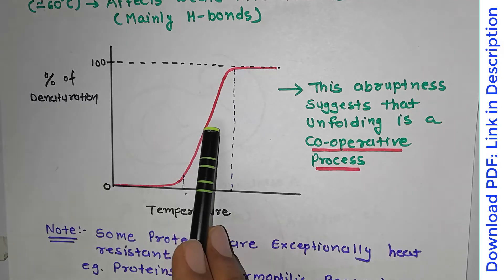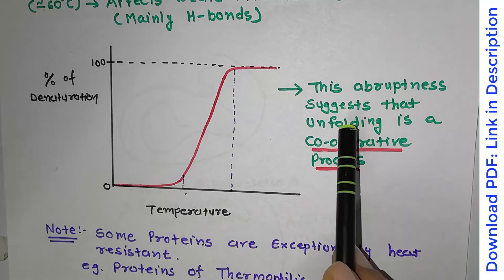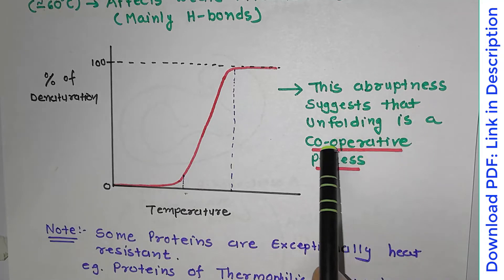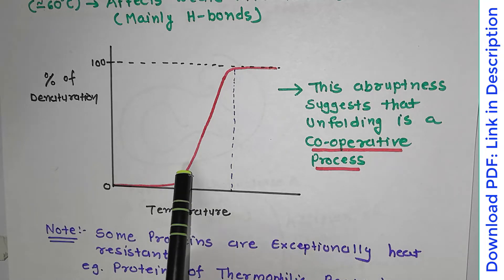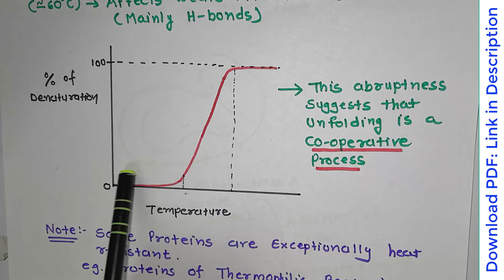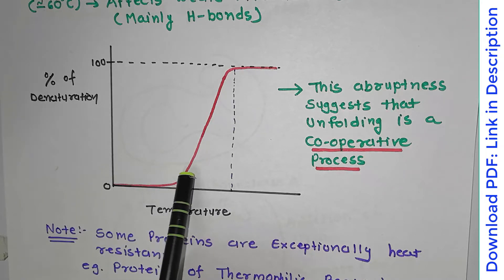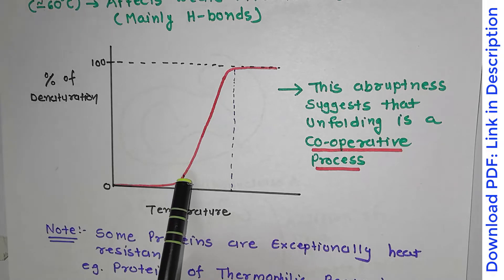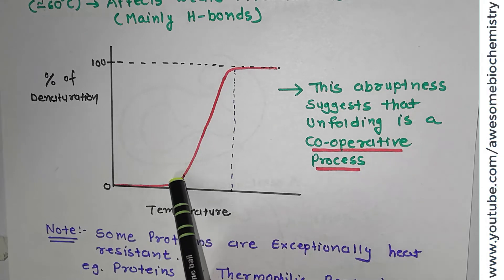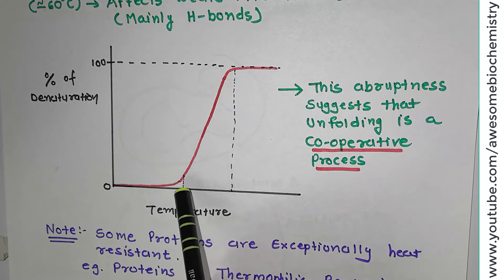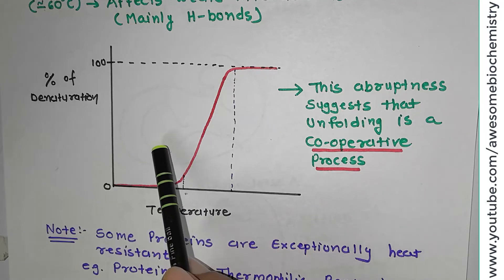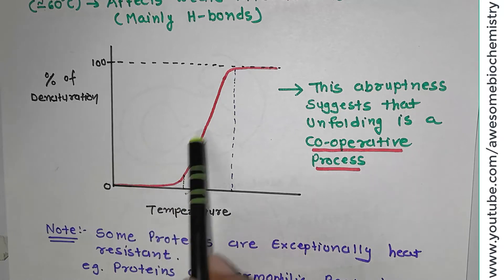This abruptness suggests that unfolding is a cooperative process. At a temperature of, let's say, 55 degrees Celsius, only a minor portion of the protein is getting denatured — maybe 2% or 3%. This very small part becomes destabilized, and this destabilized part helps other properly conformed protein to get denatured. So one part which gets destabilized assists other parts of the protein to get denatured — that is the cooperative process suggested by this graph.